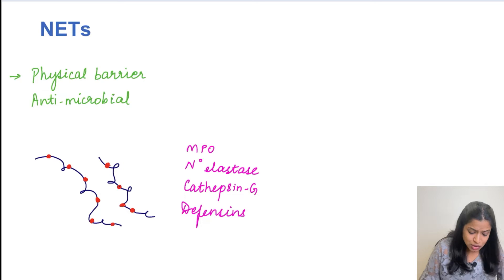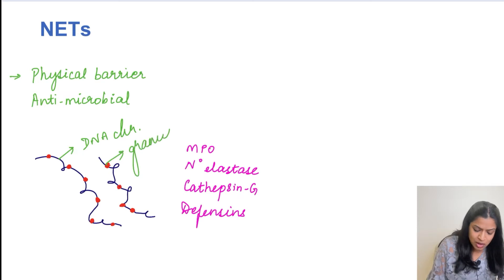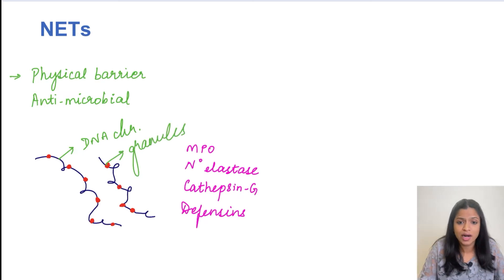So what is the structure of these NETs? It is just a filamentous web-like structure here. So this blue color is the DNA chromatin which is being present. On this we can see this red color thing which are the granules. So the granules, what are the neutrophil granules usually?